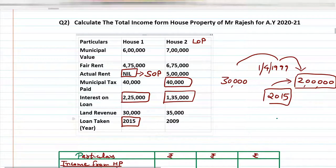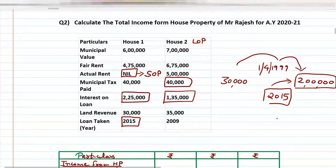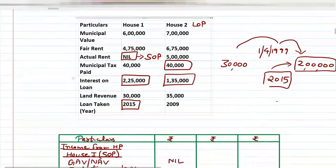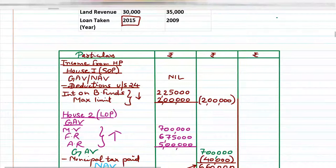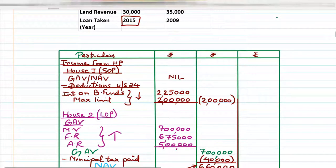Since 2015 is after 1st April 1999, the maximum limit is ₹2,00,000. Apply the 'whichever is less' concept. Interest on loan is ₹2,25,000 and maximum limit is ₹2,00,000 — whichever is less is ₹2,00,000. So ₹2,00,000 is written in the second column. Note: do not deduct ₹25,000 — just apply the lesser value rule.